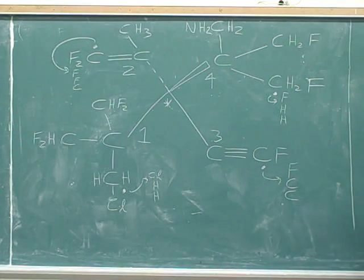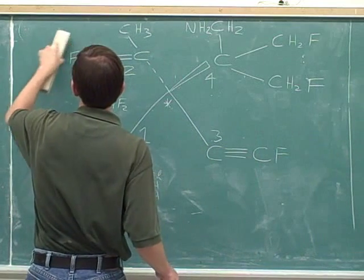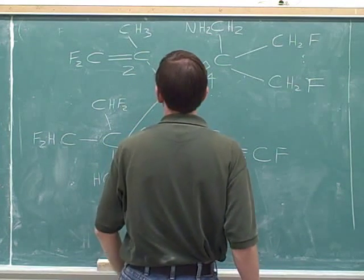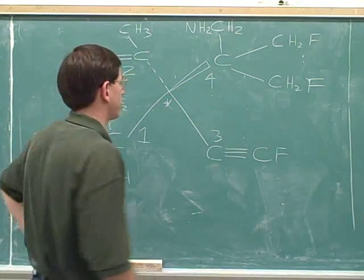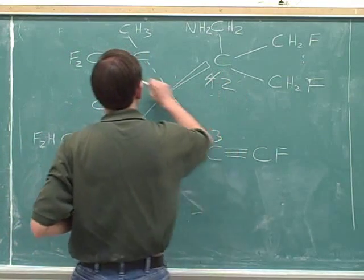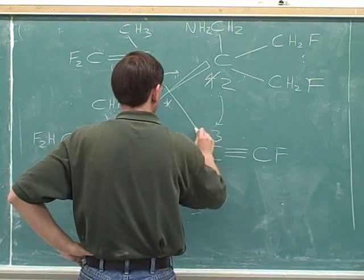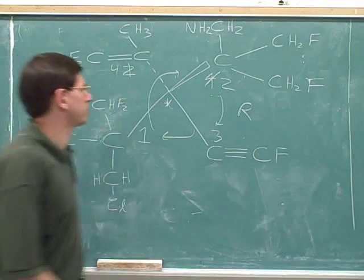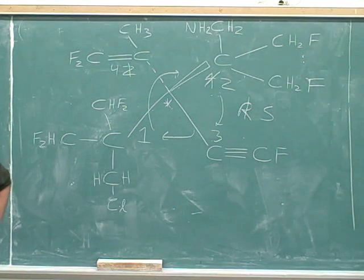Now that we finally have the priorities, we can erase our work. The number four priority is pointing towards us, so we need to swap it so that it's pointing away from us — we'll swap it with the number two. Now the number four is pointing away from us. The configuration of 1 to 2 to 3 on the page is clockwise, which is R. But what was the configuration before the swap? According to the single swap rule, before the swap it must have had the opposite configuration. So the correct configuration of this stereocenter is S.